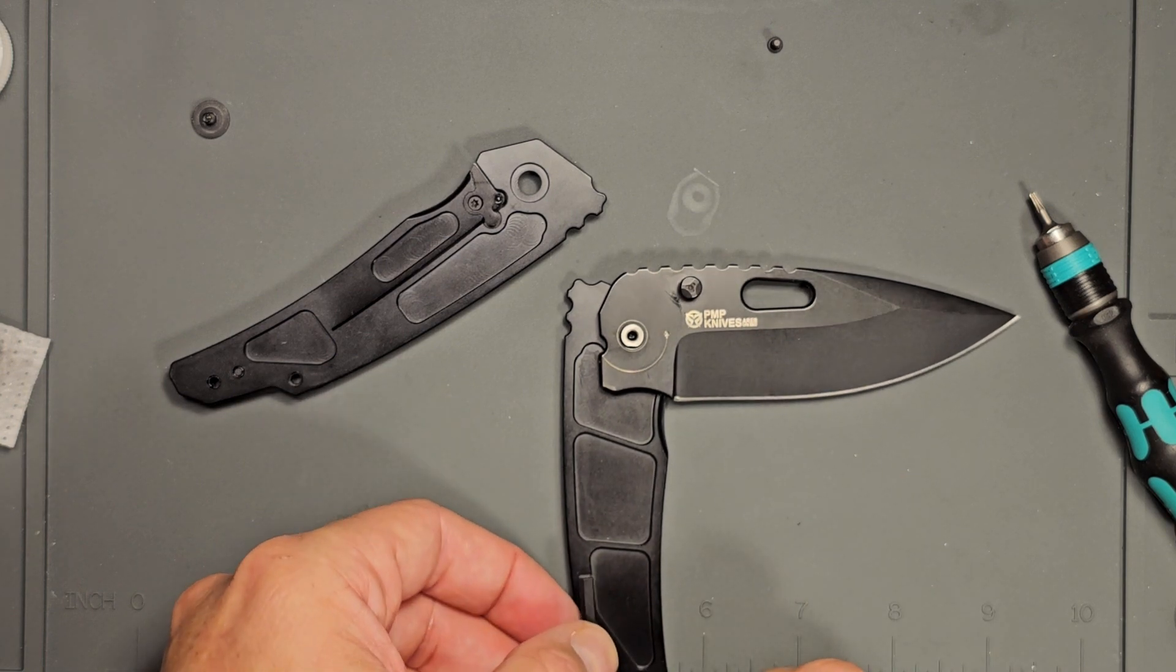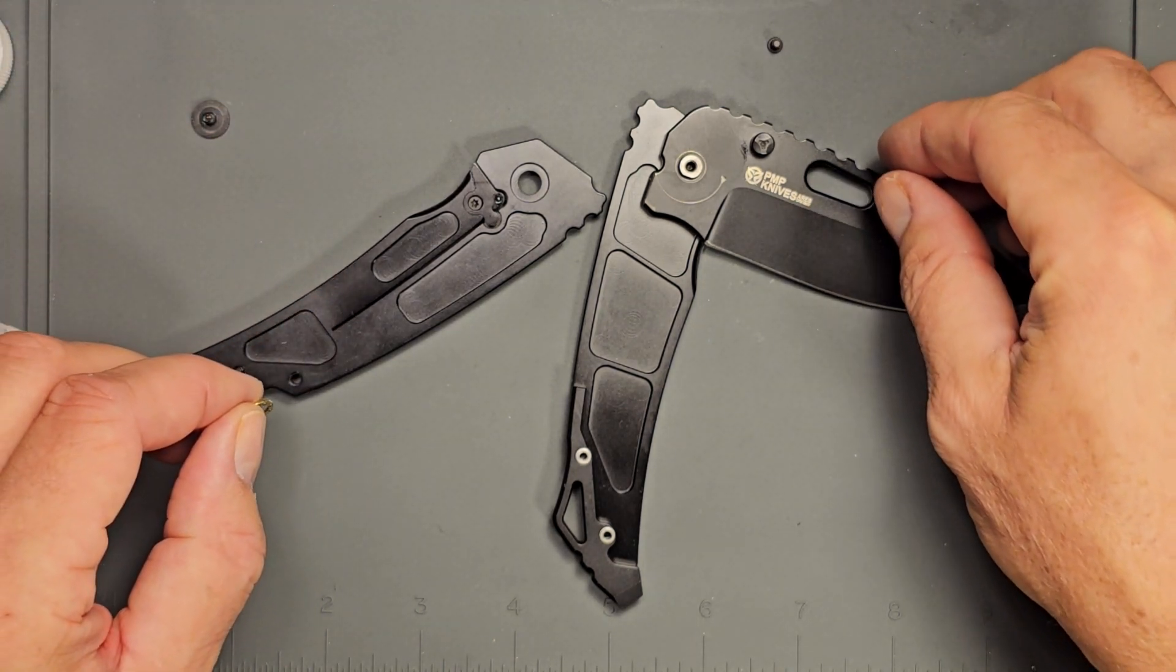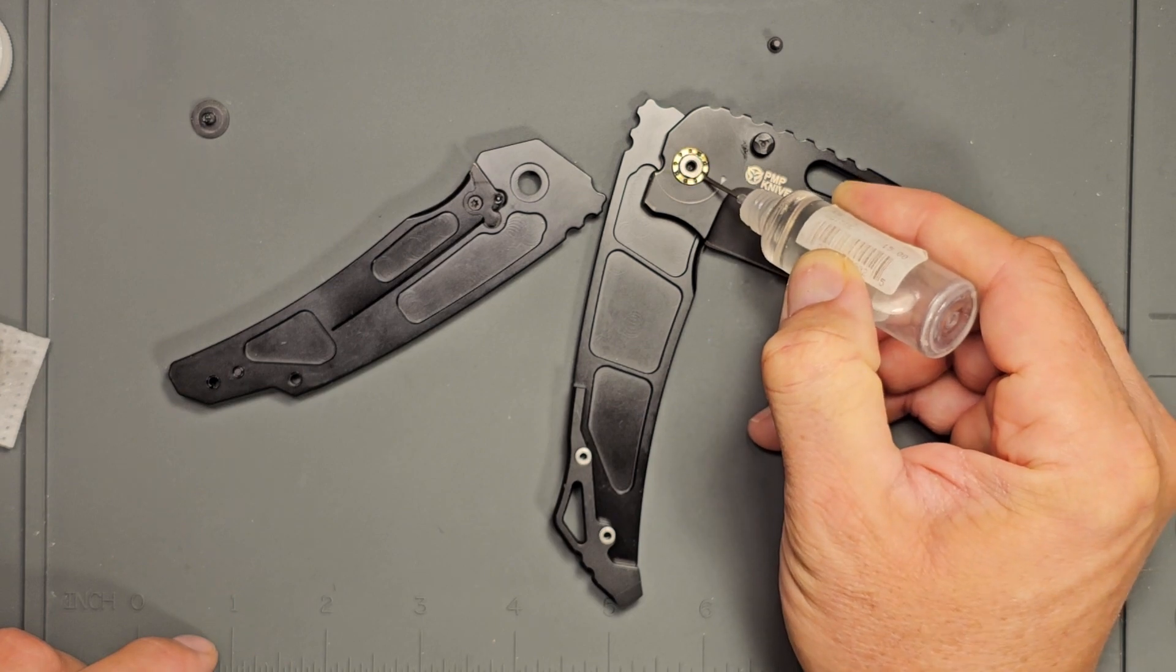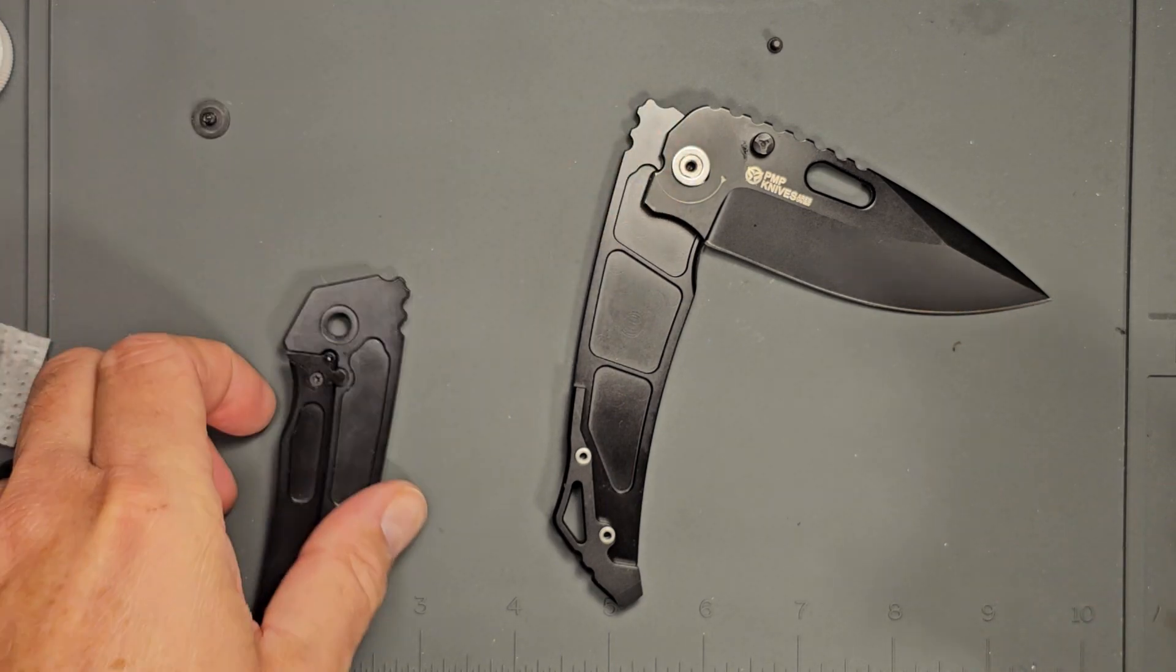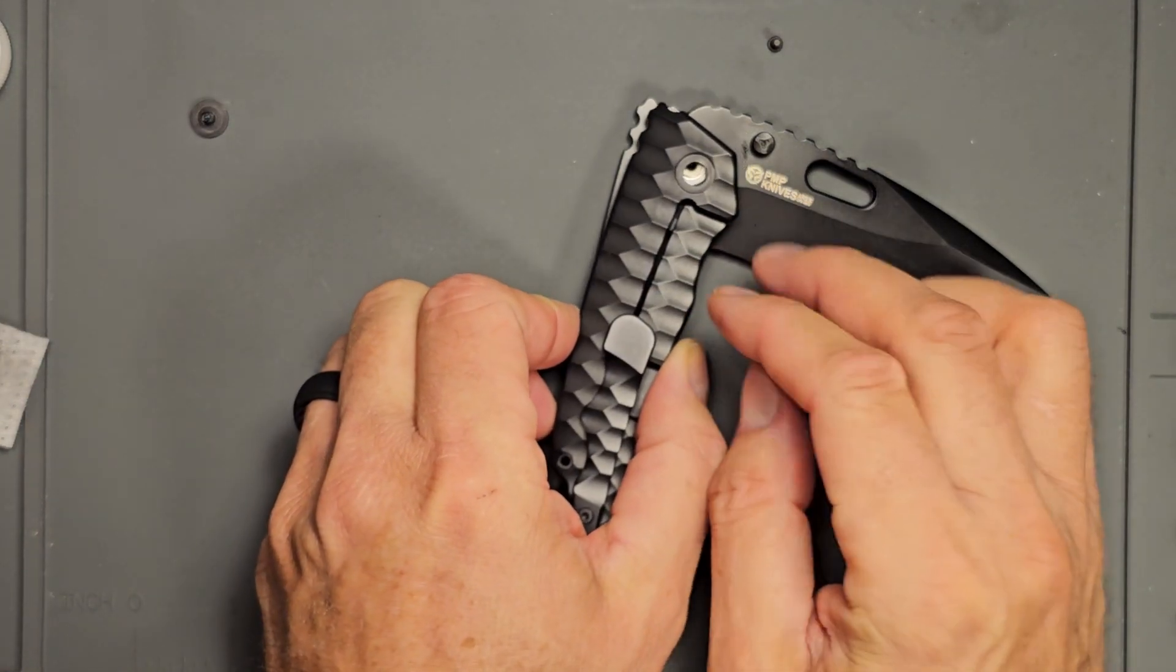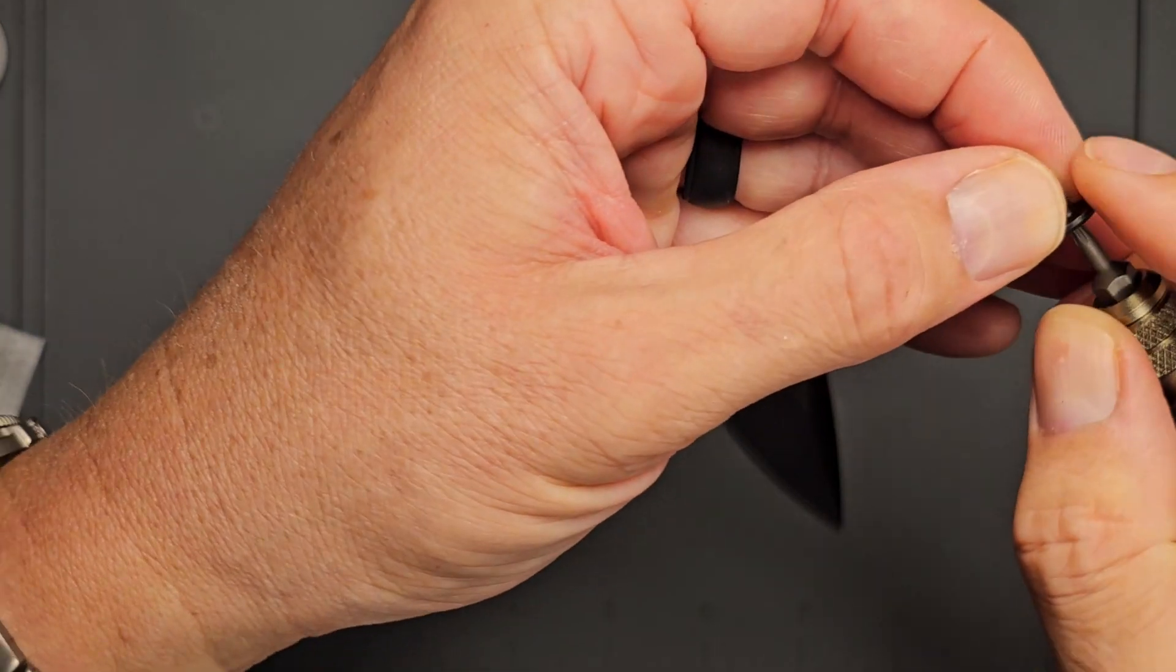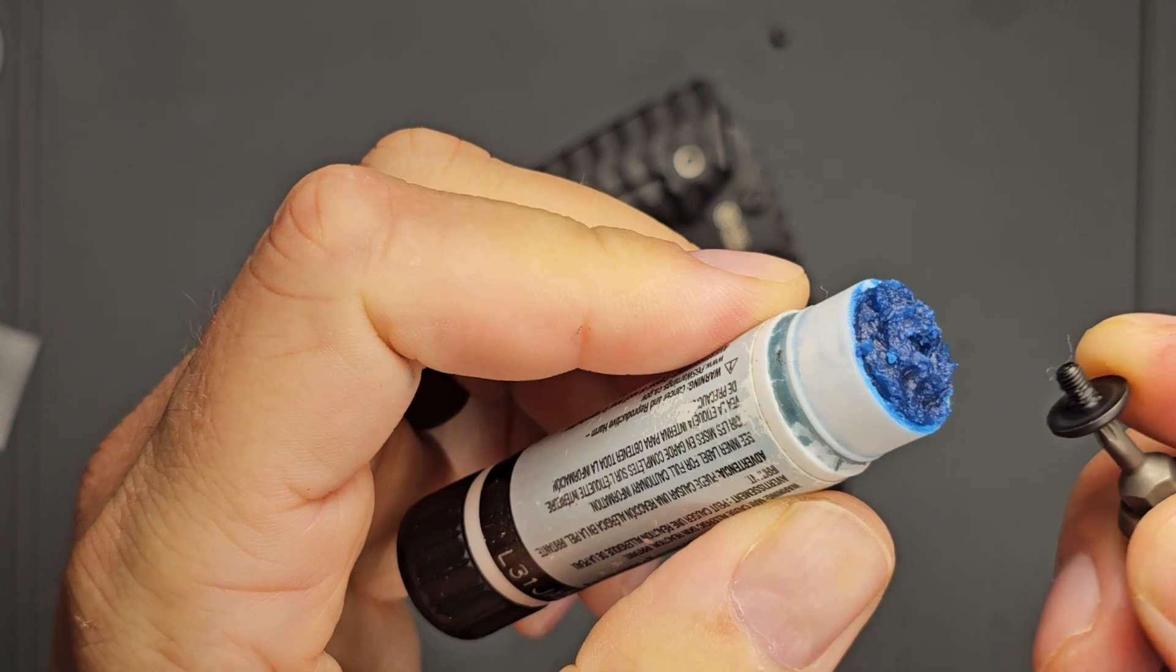Let's get that back spacer back on. And let's see. Now let's go ahead and put this washer on before I forget. Let's get the detent ball, just a little drop there, and go ahead and slide this one back together. All right. We're going to put some of the Loctite stick on the threads there.